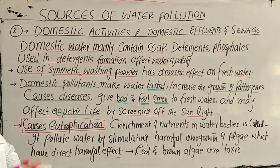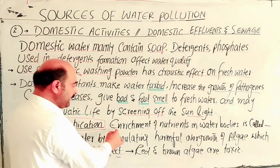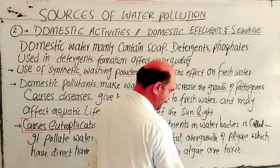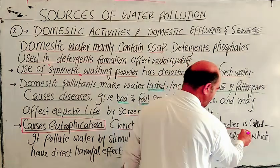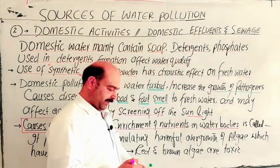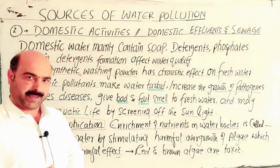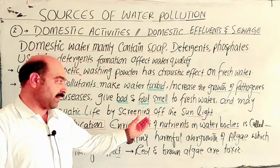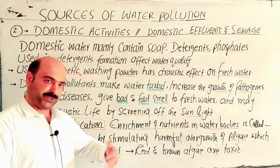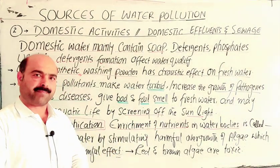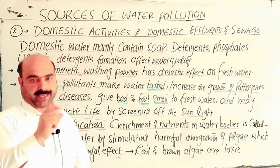This then causes eutrophication. What is eutrophication? It is the enrichment of nutrients in water bodies — it is called eutrophication. Important nutrients and energy increase, and this is called the eutrophication process.